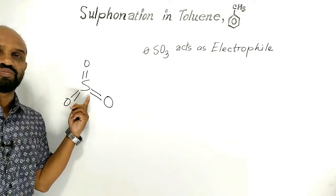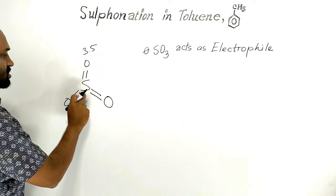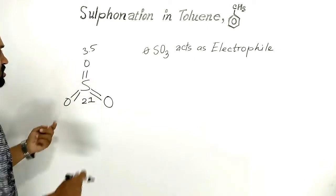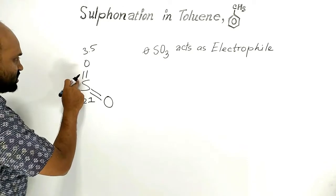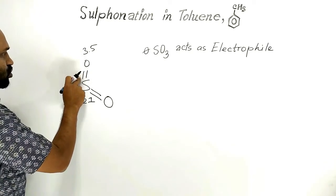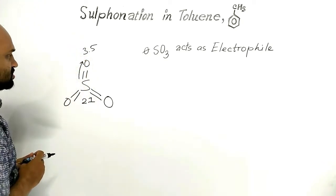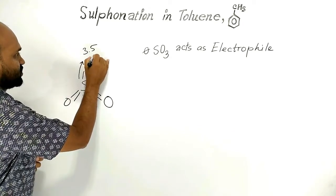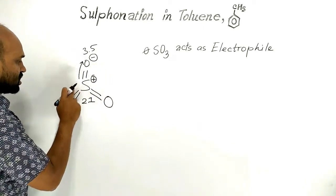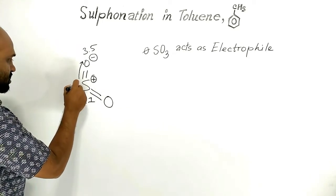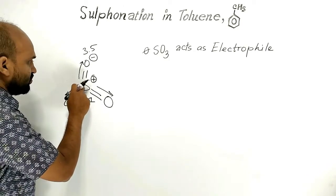Looking at the structural formula of sulfur trioxide: the electronegativity of oxygen is 3.5 and sulfur is 2.1. The electronegativity difference is quite high between oxygen and sulfur. Because of this high difference, the covalently bonded electrons of sulfur and oxygen move towards oxygen, and as a result a negative charge develops over oxygen and a positive charge develops over sulfur.